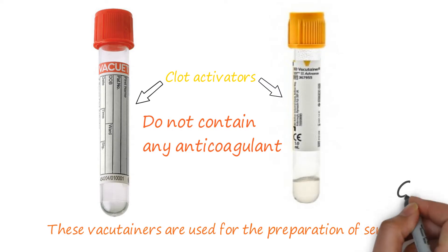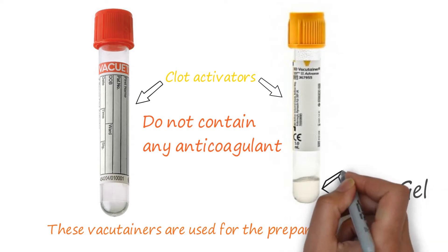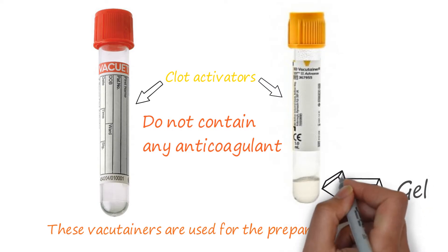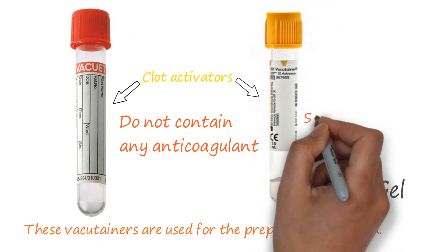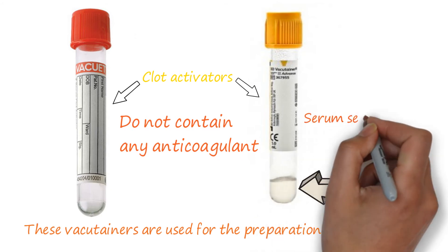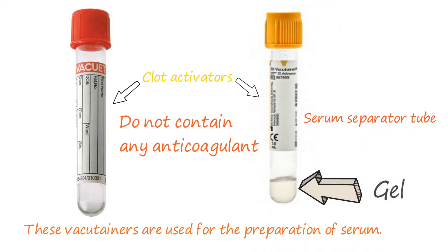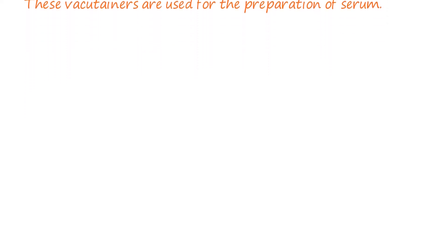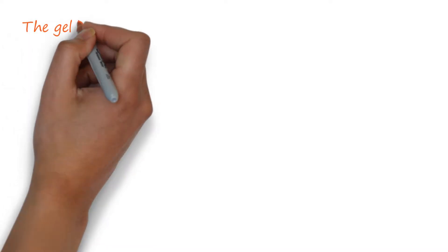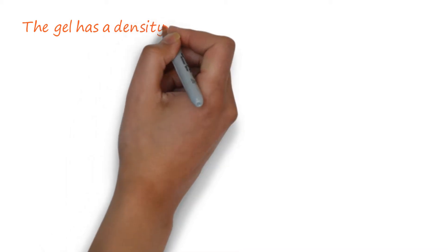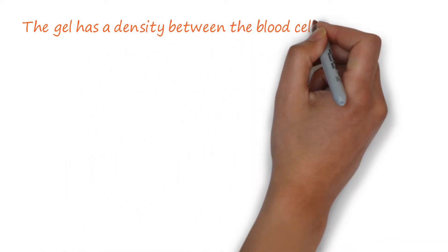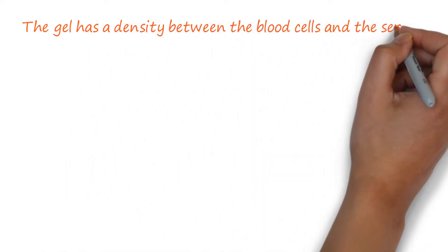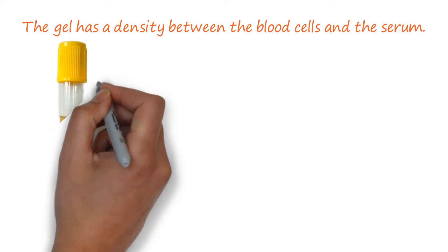The only difference is that a gel is present in the serum separator tube but not in the red top tube. As the name implies, the gel in the SST separates the serum from the blood cells. The gel has a density between that of the blood cells and the serum.